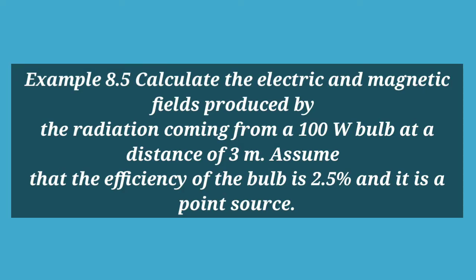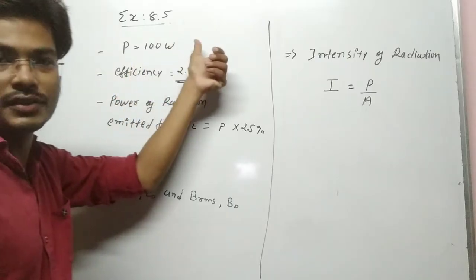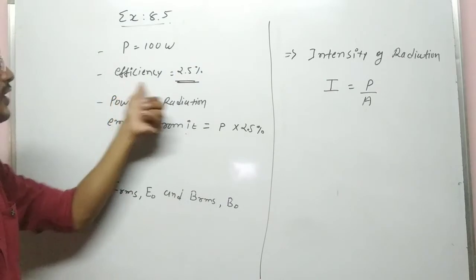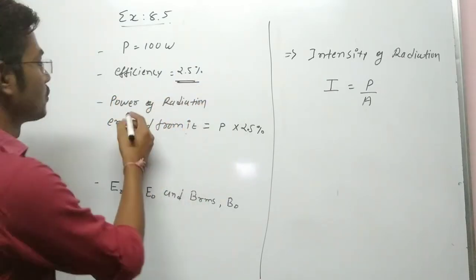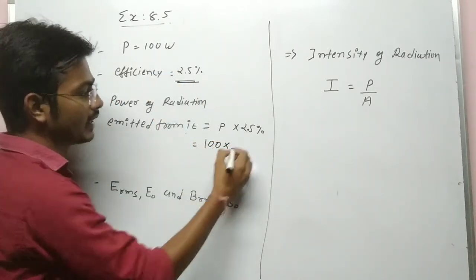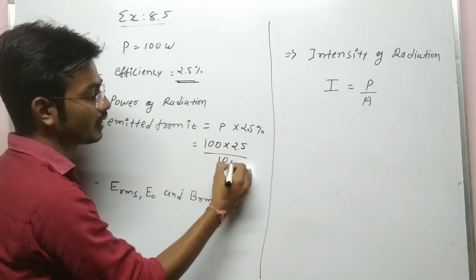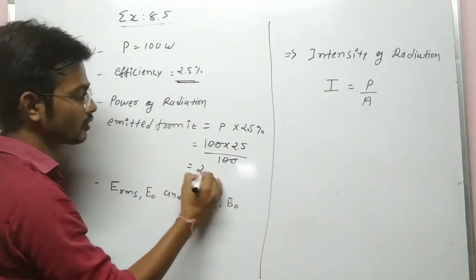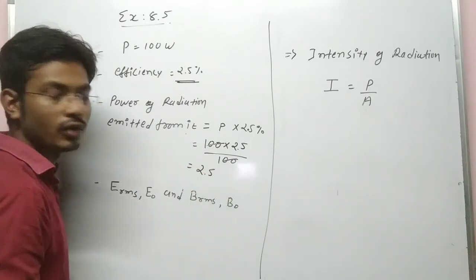Example 8.5. Calculate the electric and magnetic field produced by radiation coming from a 100 Watt bulb at a distance of 3 meter. Assume the efficiency of the bulb is 2.5% and it is a point source. So power P = 100 Watt, efficiency = 2.5%, giving power of radiation emitted = 100 × 2.5/100 = 2.5 Watt.